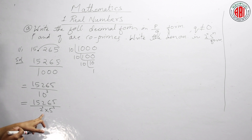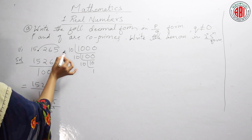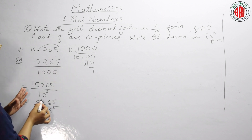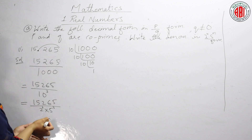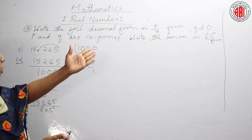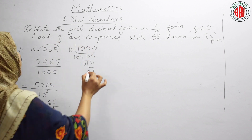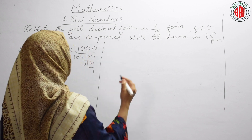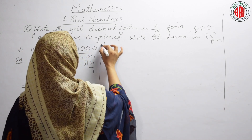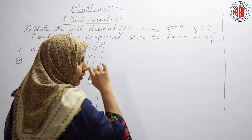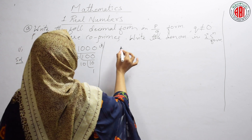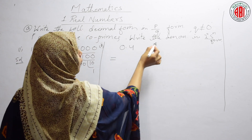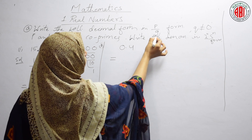Already it is a terminating decimal because it terminates at 5. The answer we are getting confirms it is a terminating decimal, but you have to convert it to P/Q form. Now the next one: 0.4 — a simple one. We have to write 0.4 in P/Q form.